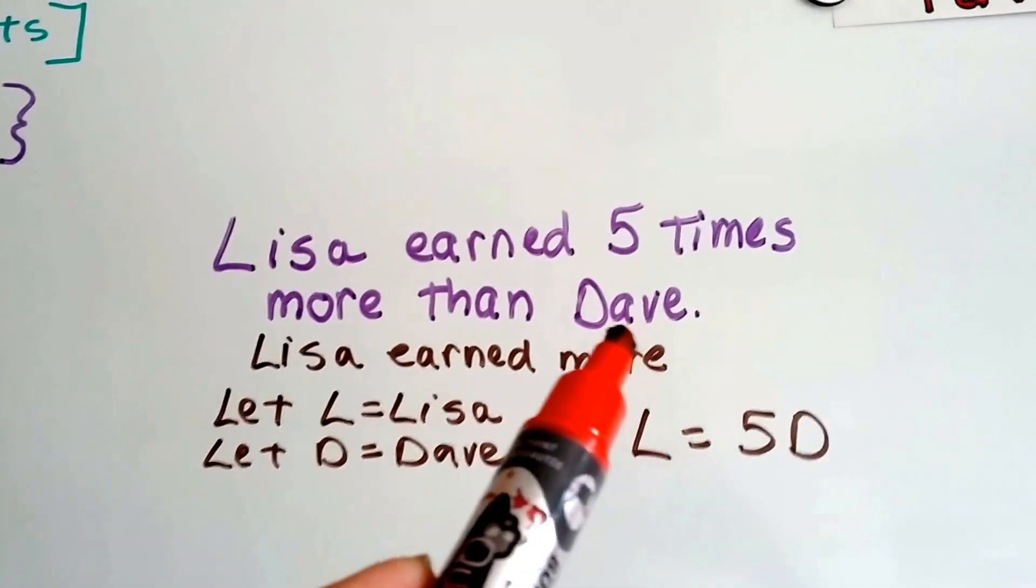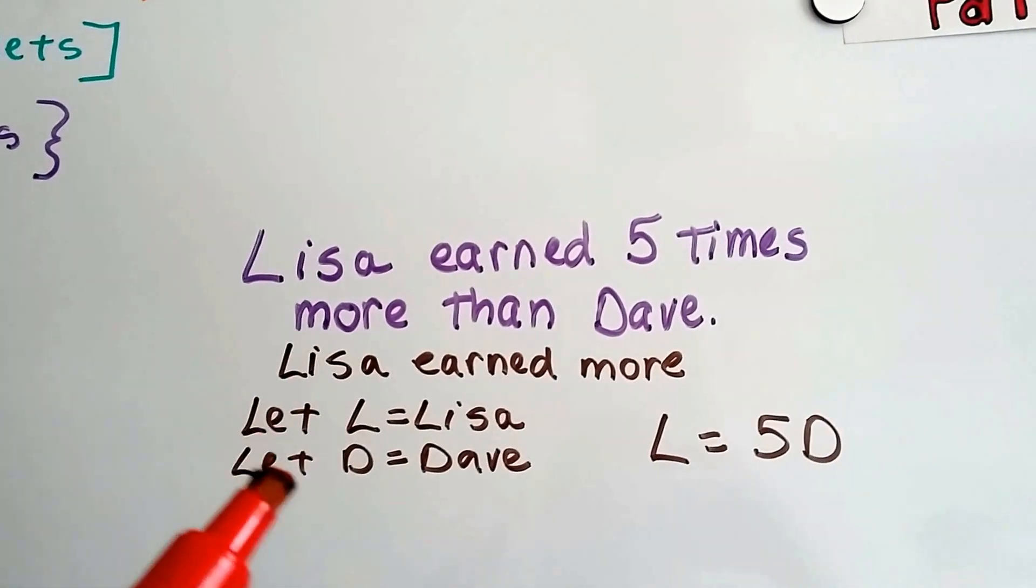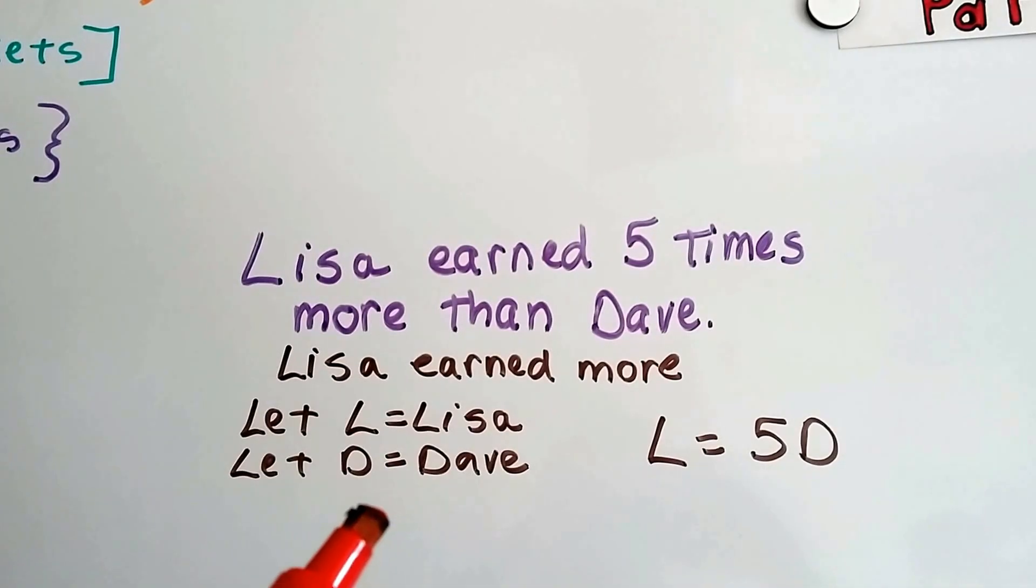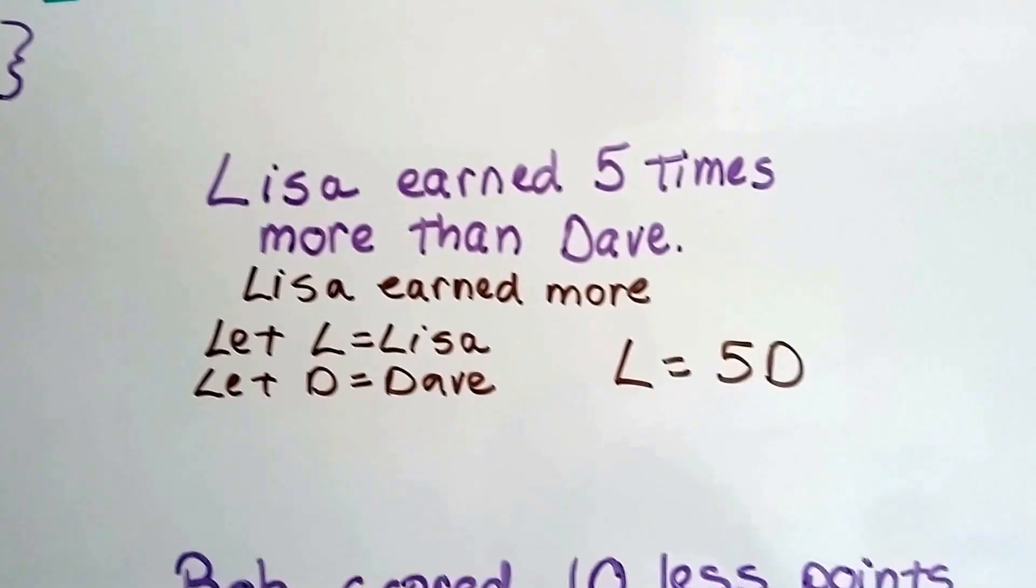So whatever Dave made, if we multiply it by 5, that's going to equal Lisa. So we're going to let L be Lisa and D be Dave. And it helps us keep track. Lisa is equal to 5 times Dave. That's our equation.